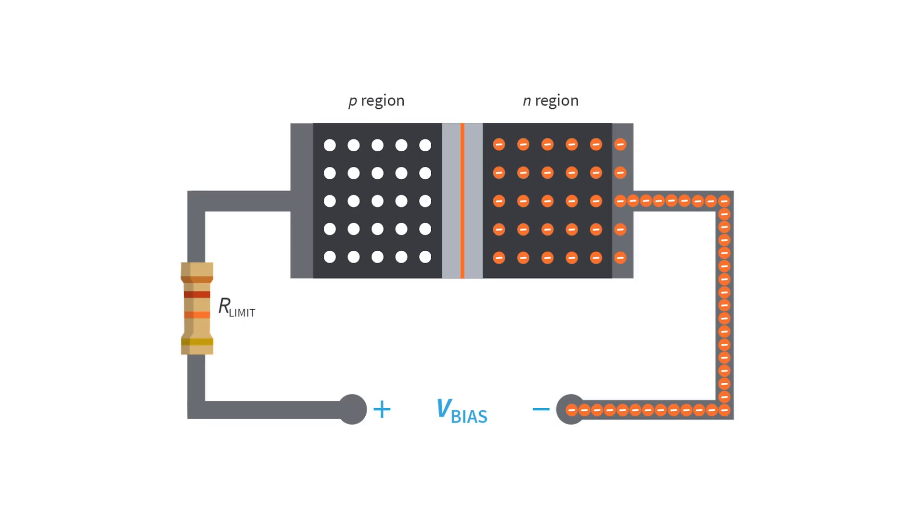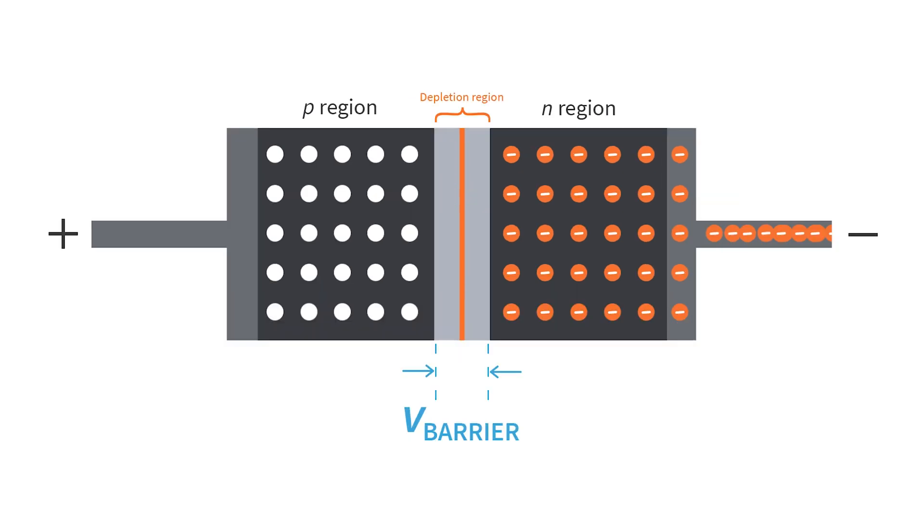Now, when a diode is forward biased, the negative side of the external bias voltage pushes the majority carriers in the N region, which are free electrons, toward the P-N junction. It also provides a continuous flow of electrons into the N region through the external connection or the conductor. The movement of the free electrons here is called electron current. With the help of the external bias voltage, the free electrons can now overcome the barrier potential of the depletion region and move on through into the P region.